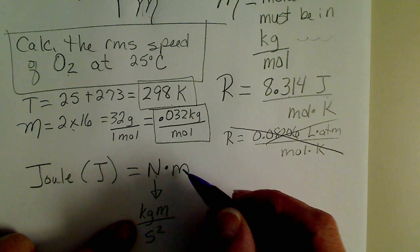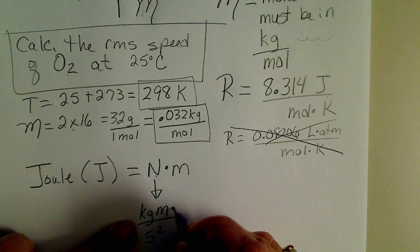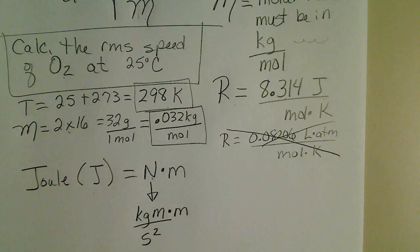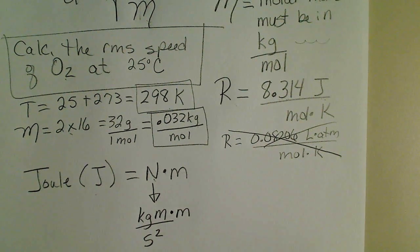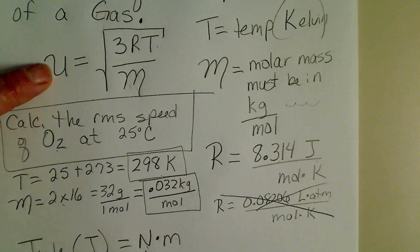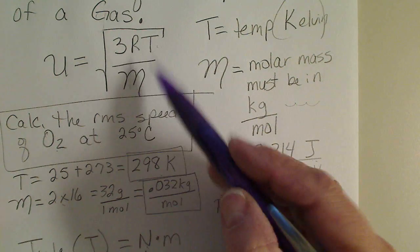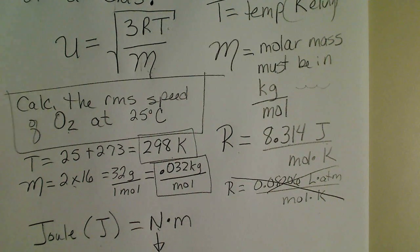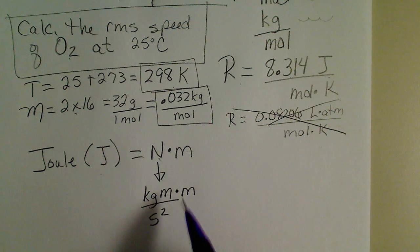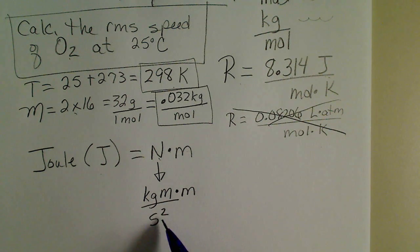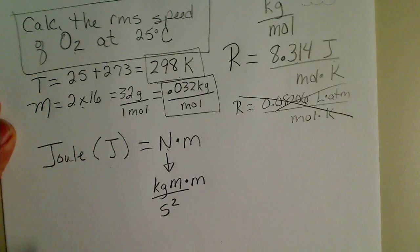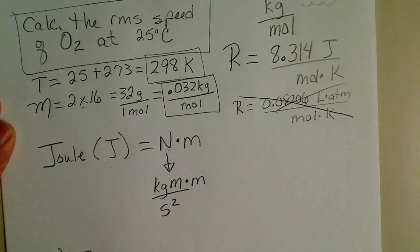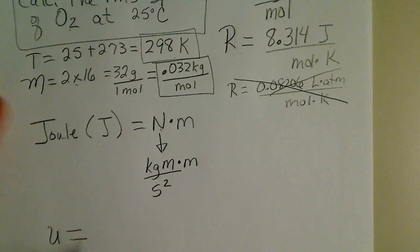When I use this formula, the square root of 3RT over the molar mass, I will put all the units in, and we'll see that the speed is going to end up being the square root of a meter squared per second squared. So let's plug all those values in.